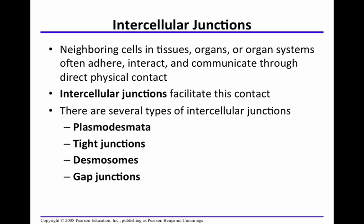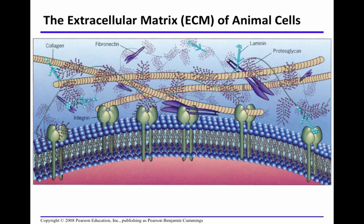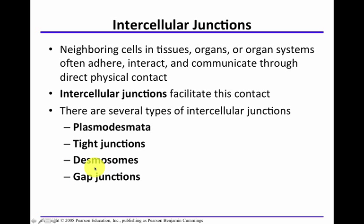There are also intercellular junctions. Neighboring cells in tissues, organs, or organ systems communicate through direct physical contact. These intercellular junctions facilitate contact between cells. There are several types: plasmodesmata in plant cells, tight junctions, desmosomes — also called anchoring junctions — and gap junctions.